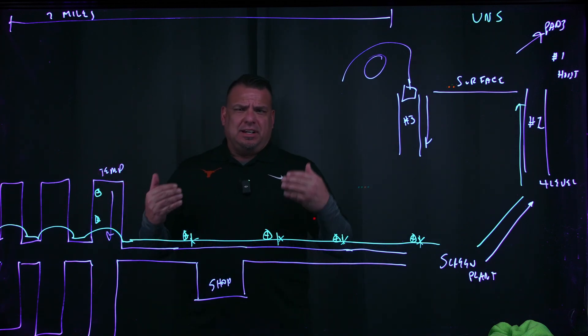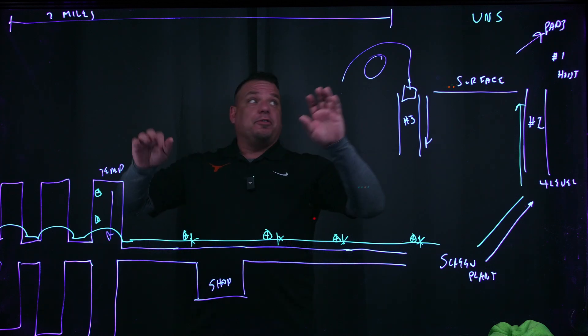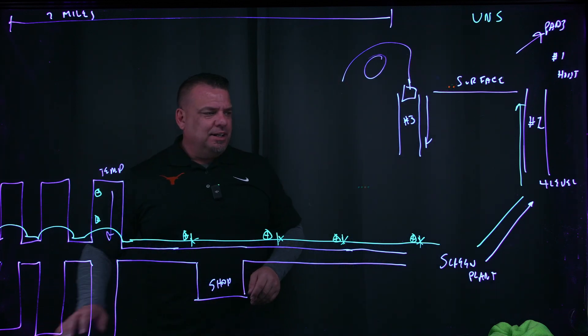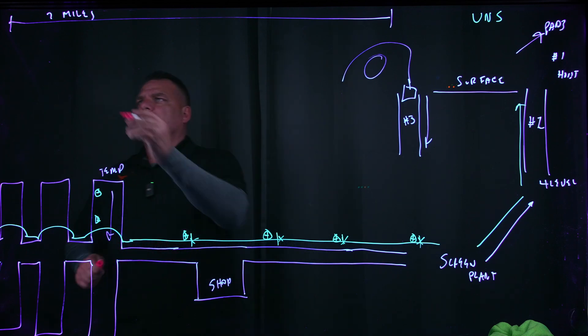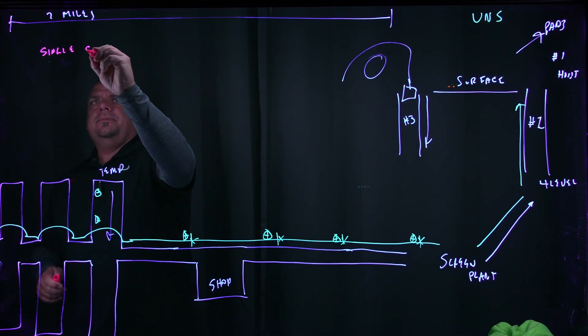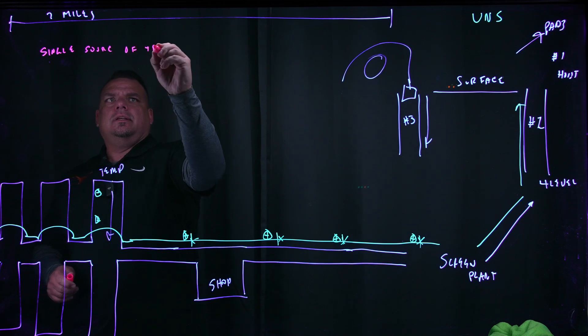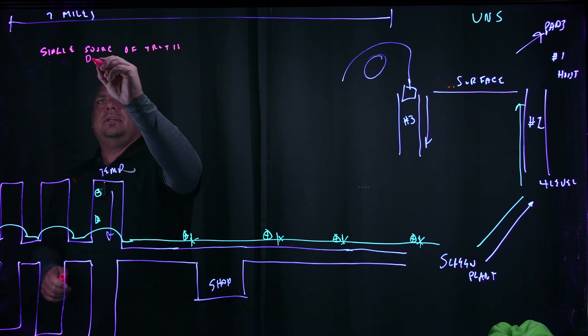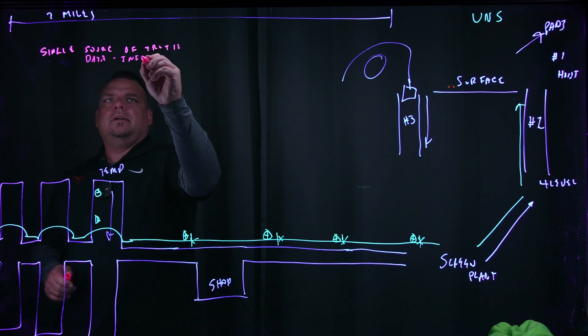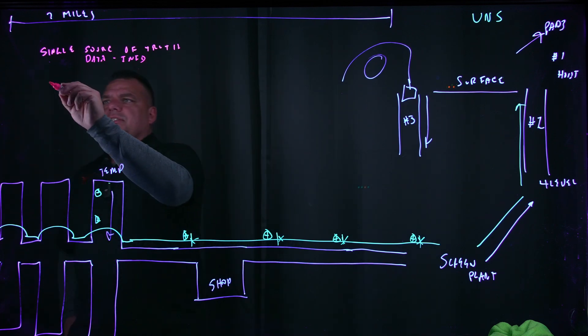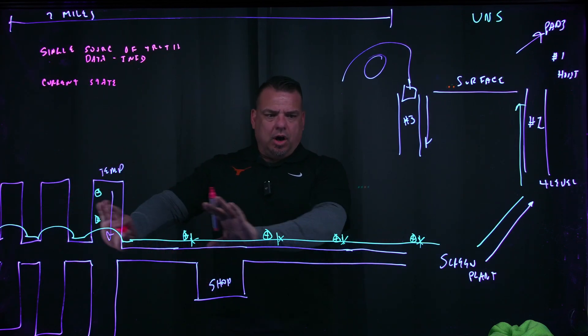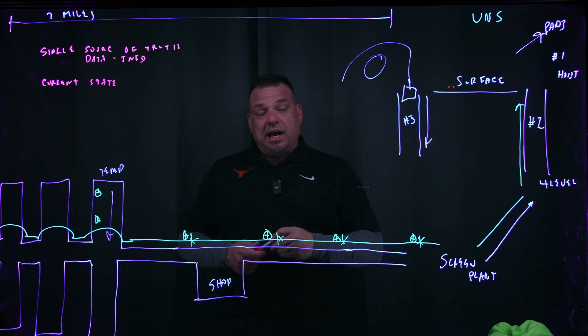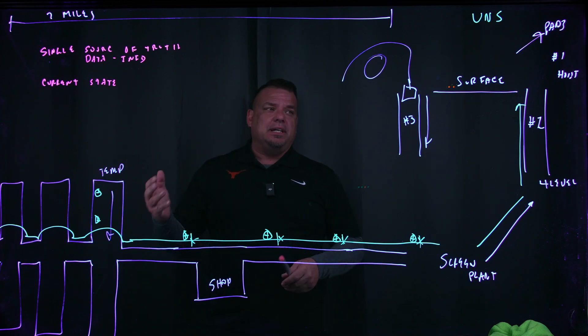It was basically everything that we did was reacting to crisis. And so where the first unified namespace came from was I wanted to create a single source of truth, a single source of truth for all data and information and current state. I wanted to monitor current state of the entire mine, all underground and on surface. And at the time, in 2002, 2003, that was actually really, really hard to do.